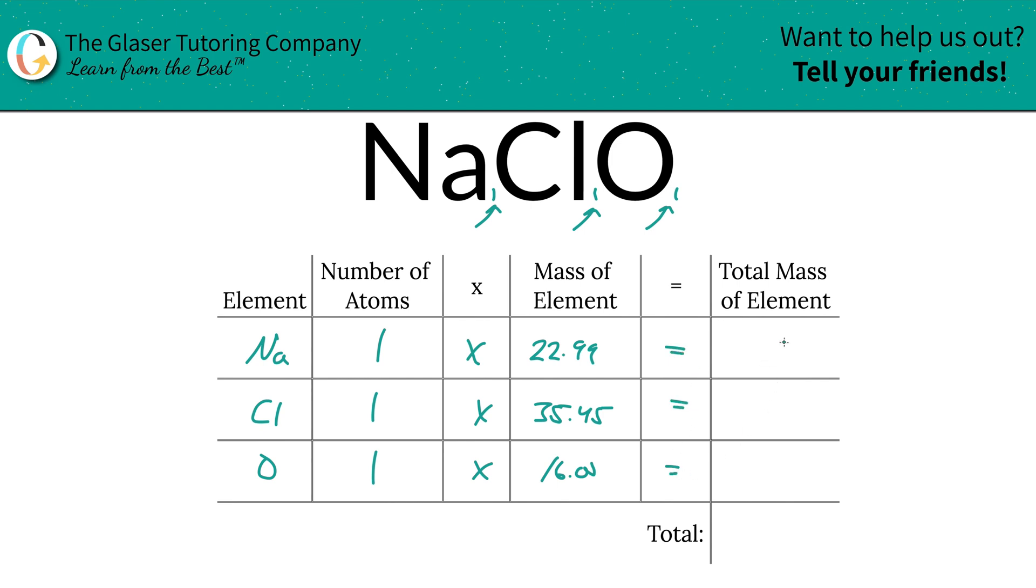Then you're going to multiply across the rows to find the total mass of the element. The total mass of sodium here is 22.99, total mass of chlorine is 35.45, and total mass of oxygen is 16.